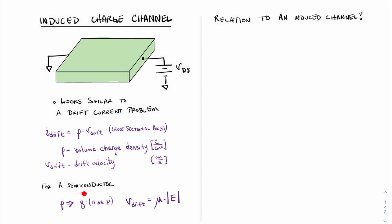For a semiconductor, we can think of the volume charge density as the charge of the particular carrier and the number of carriers, the volume number of carriers, either n or p. If it's electrons, it's n, holes p.